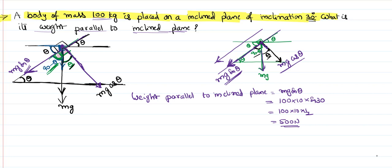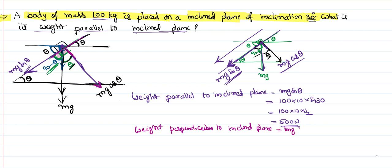We can also calculate the weight perpendicular to the inclined plane, though it is not asked — just for clarity. The component perpendicular to the inclined plane is mg cos theta. With m = 100, g = 10, and cos 30 = √3/2, this gives 100 × 10 × √3/2 = 500√3 newtons.